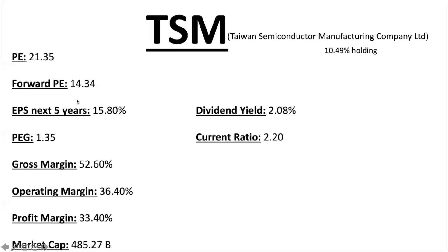I'm going to go over the PE, Forward PE, EPS, PEG ratio, and margins along with the dividend and current ratio. If you don't know how to calculate these, I'll make videos coming up. The PE ratio is the price-to-earnings ratio — you take the share price divided by the trailing 12-month EPS. Forward PE is the same thing except using the next four quarter projections.